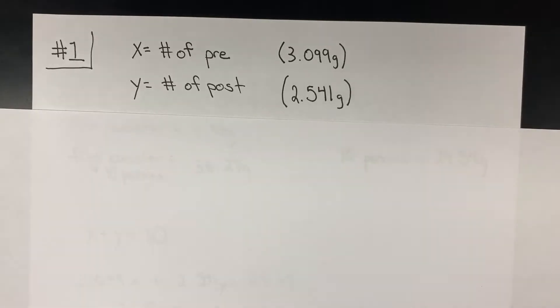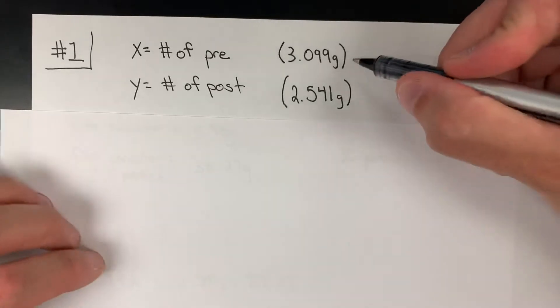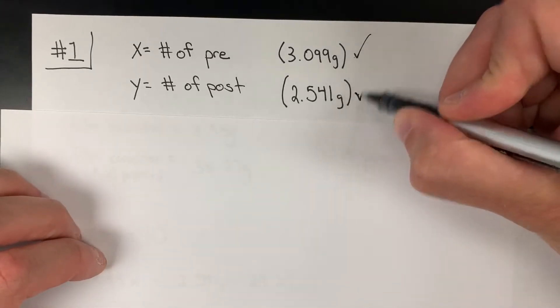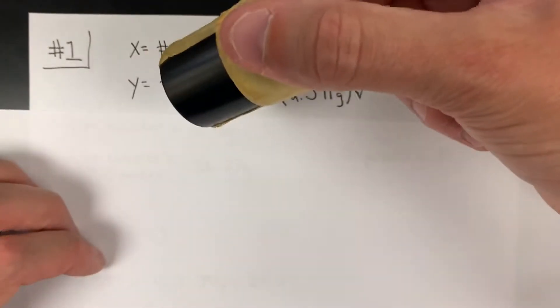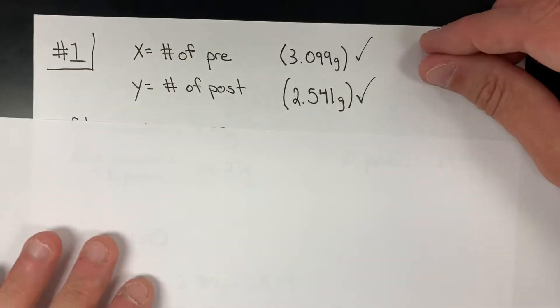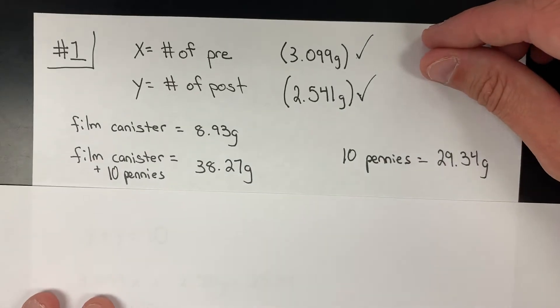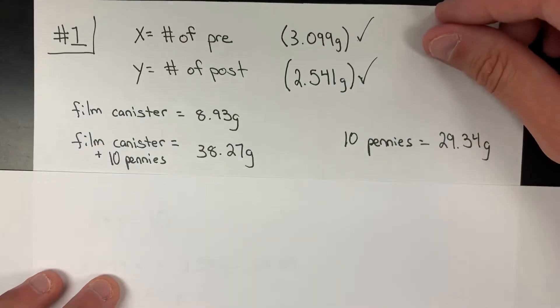Question number one says: using the average atomic mass for both pre and post-82 pennies established using the class data, develop an algebraic solution to solve for the number of pre and post-pennies in your film container. As far as that algebraic expression goes, there are a couple things to keep in mind.